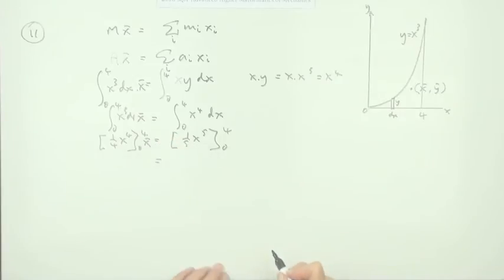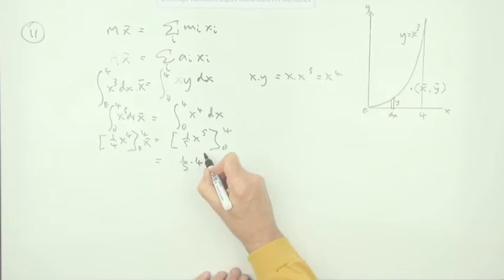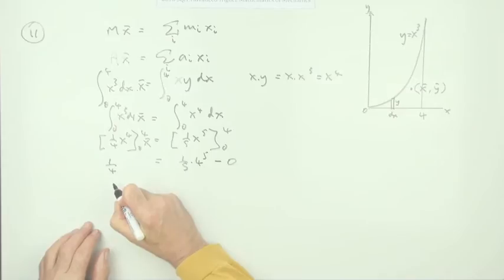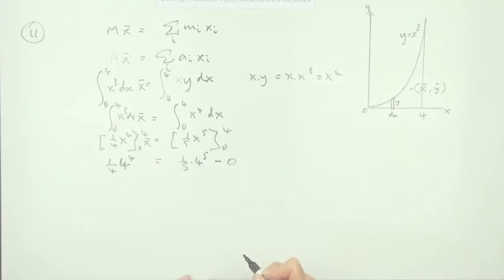I forgot my x̄. So this is going to be a fifth of 4 to the power 5 minus 0. And that's going to be a quarter of 4 to the power 4 minus 0. So it's that times x̄. I don't actually need to work this out because all I'm going to do with that is take it across and divide. And that's quite handy actually.